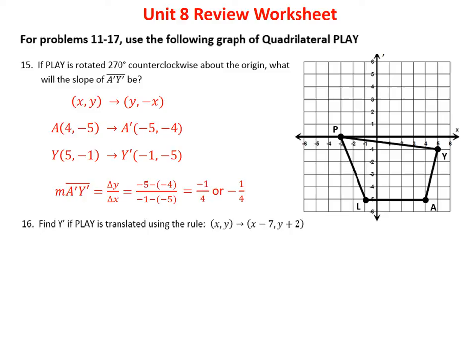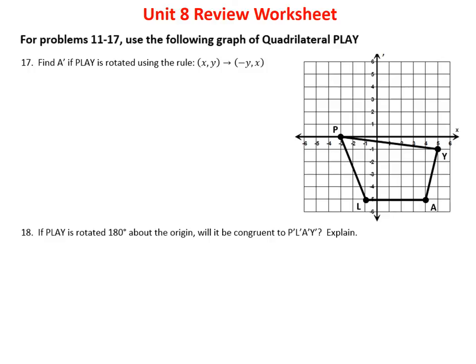Problem 16: find Y prime if PLAY is translated using a given rule. Y is at (5, −1), so applying x minus 7 gives 5 minus 7 = −2, and y plus 2 gives −1 plus 2 = 1. So Y prime is (−2, 1). Problem 17: find A prime if PLAY is rotated using the 90-degree rule (x, y) → (−y, x). Plugging in A at (4, −5): switch to (−5, 4), then take the opposite of −5 to get (5, 4).